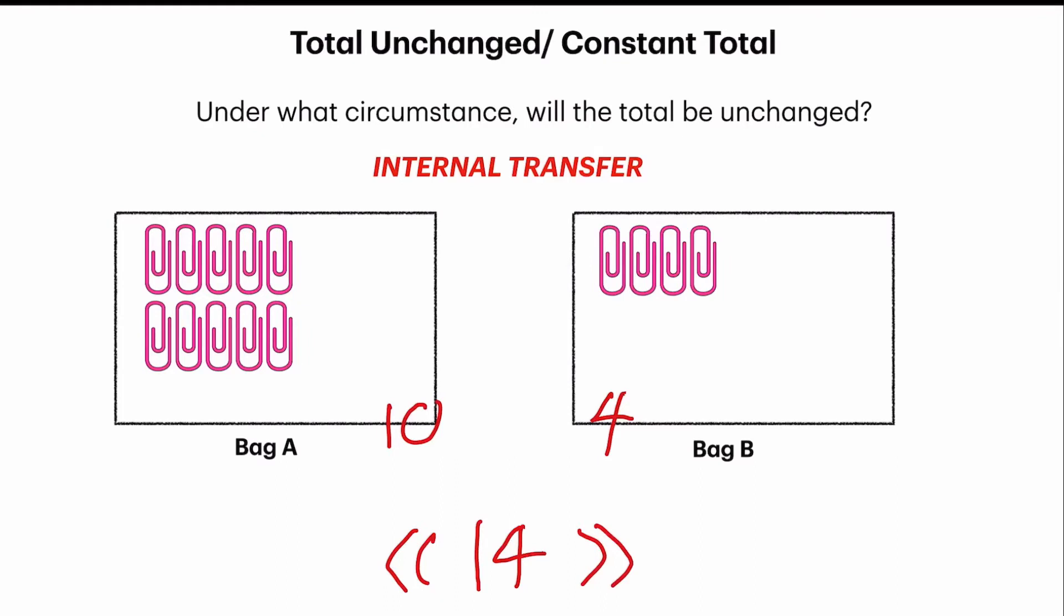Let's observe the total paperclips we have first. This total is 14. So, let's move 3 paperclips from bag A to bag B. Do we still have a total of 14 paperclips? Let's check it out. In bag A, we have 7 paperclips. And bag B, we have 2, 4, 6, 7 as well. We still have 14 paperclips.